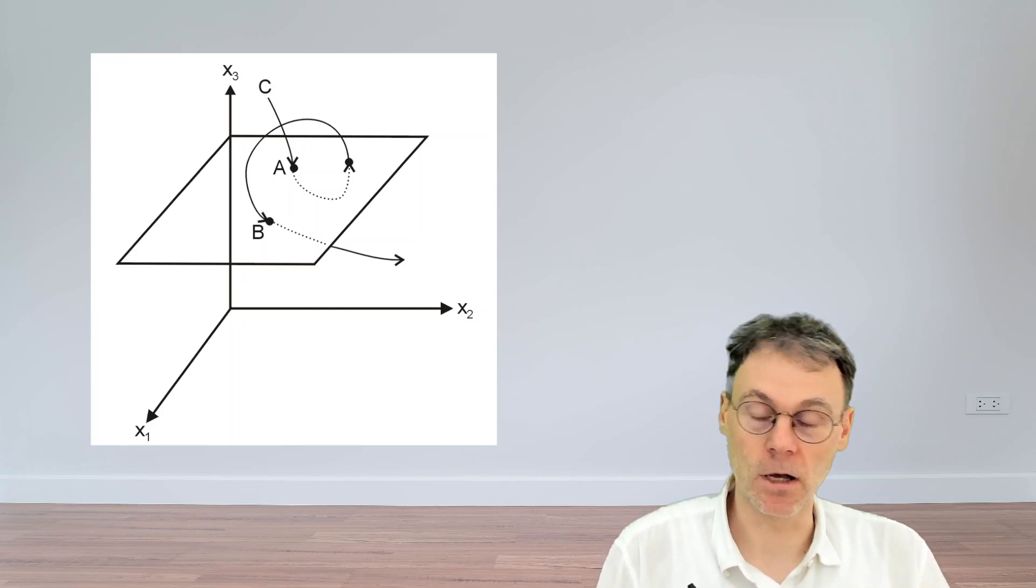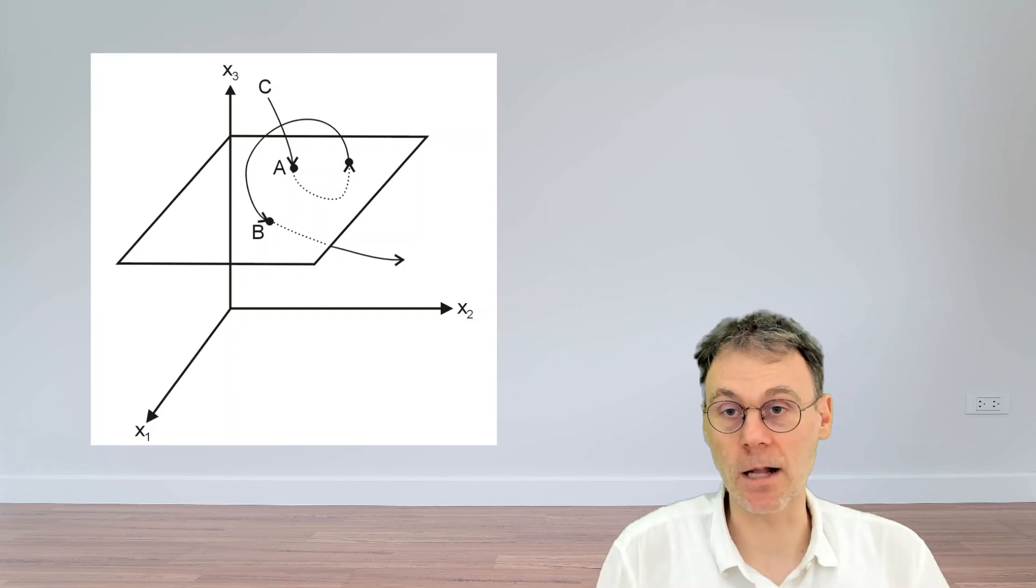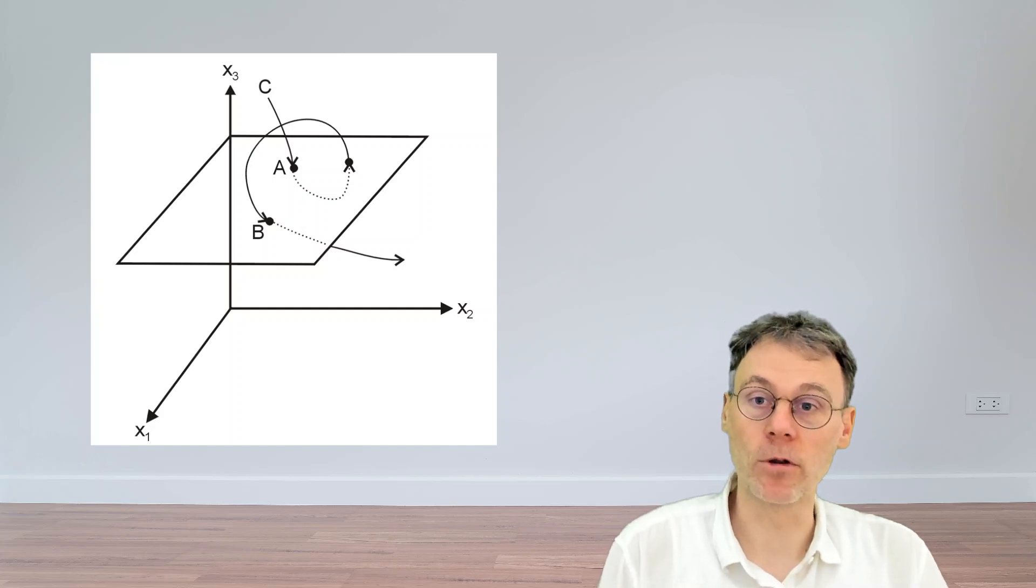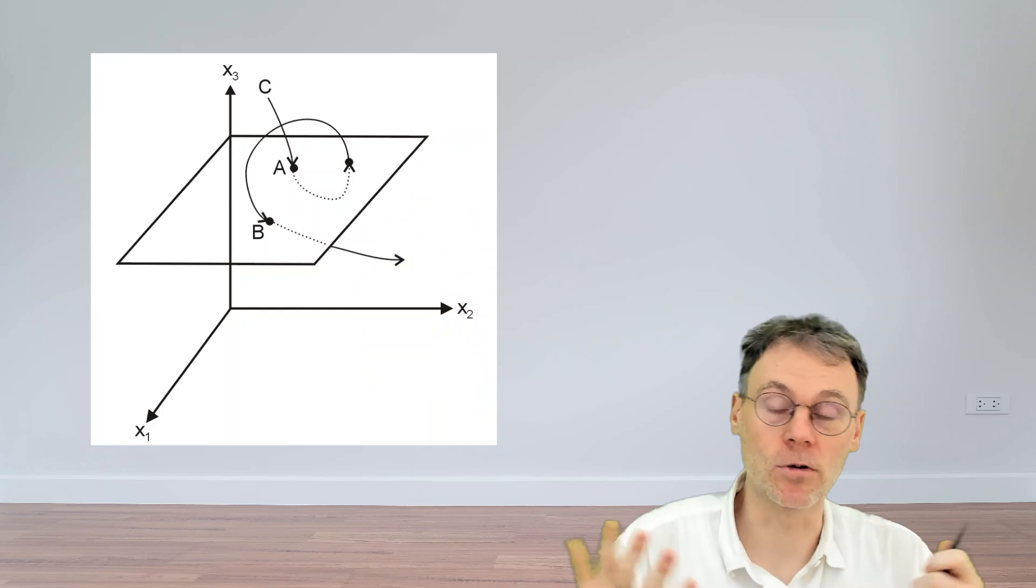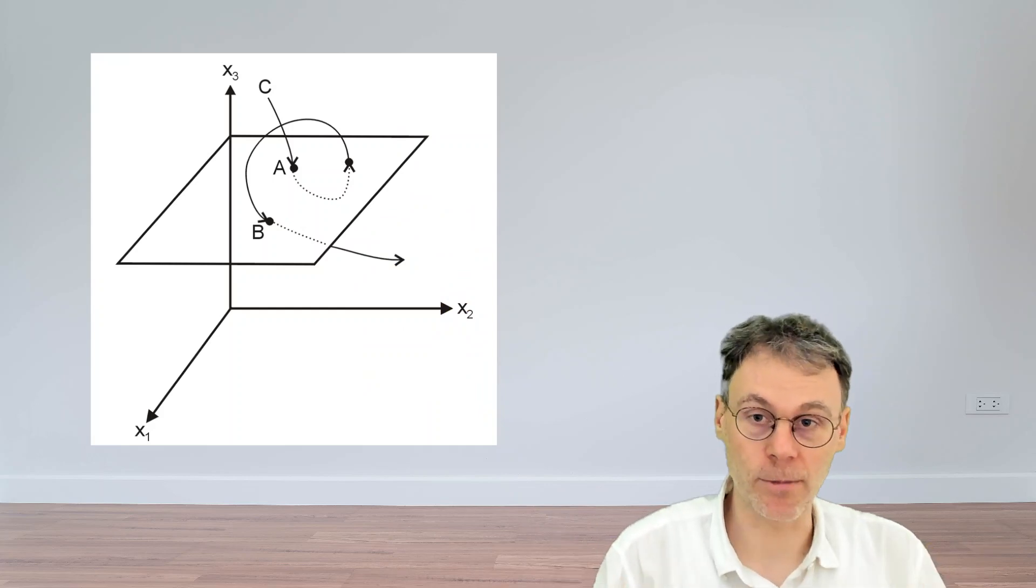Obviously, this is not something that's very easy to do analytically. So most of the time you need to do numerics in order to calculate that map. But it is something that can be done. And it's a way to simplify the description of the problem, both because you go from three-dimensional space to two-dimensional space, and because you go from continuous time dynamics to discrete time dynamics.